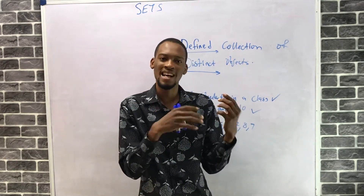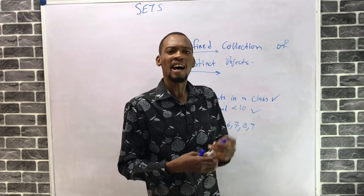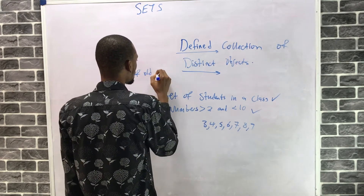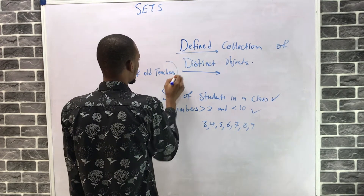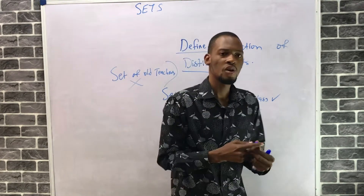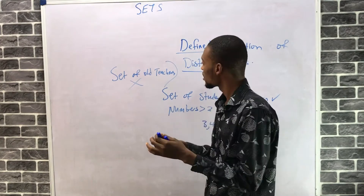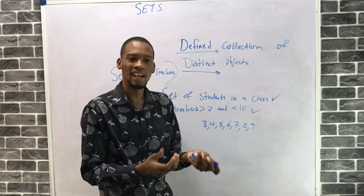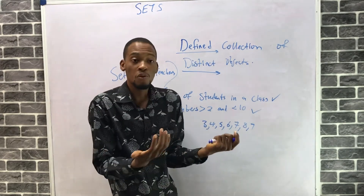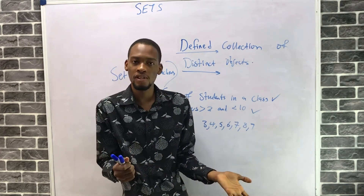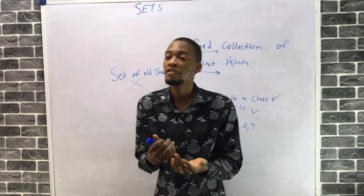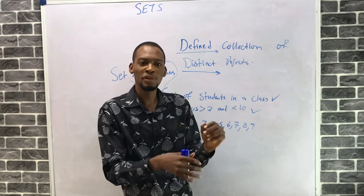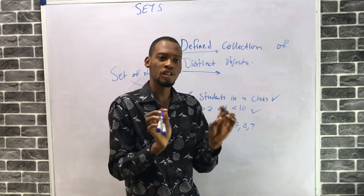Now, how about 'set of old teachers'? This is not a set because it is not defined. Not everybody will agree that someone who is 50 years of age is old. Some people will say 'I'm not old, I'm just 50.' Someone can even say 'I'm 55 and I'm not old yet,' while others say old age starts from 60. So there is debate — not everybody will agree on who is old.